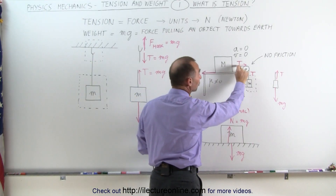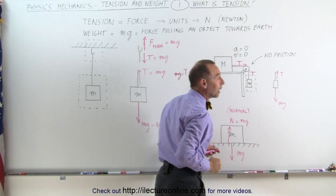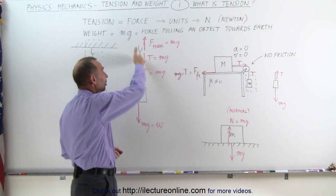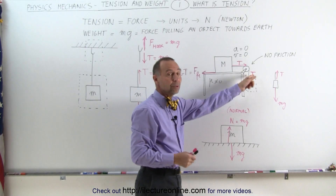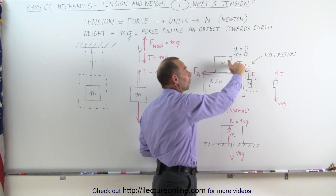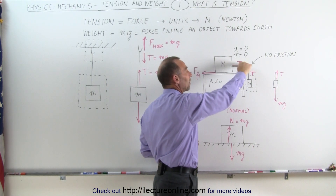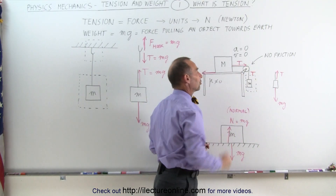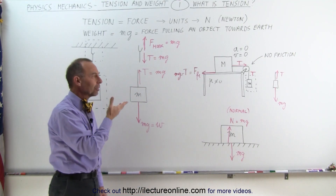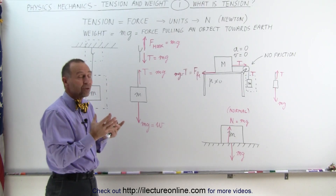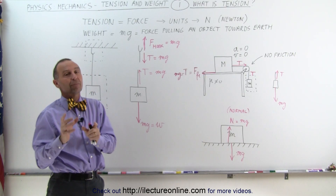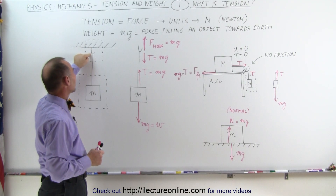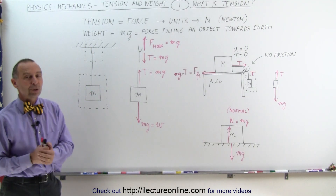Relative to the hanging block, the tension is pulling upward. Relative to the table block, the tension is pulling to the right. It always depends upon what perspective you have and what the direction of the tension is. Here the tension is in a vertical direction, but the pulley causes the tension to act in a different direction — horizontal on the other side. The tension is equal in magnitude over the entire string, as long as there's no friction on the pulley. When you wonder what is the tension on the string, the magnitude is a certain value, but the direction depends upon your perspective. With respect to the object, the tension will be upward; with respect to the hook, the tension will be downward. And that's how we look at tension.